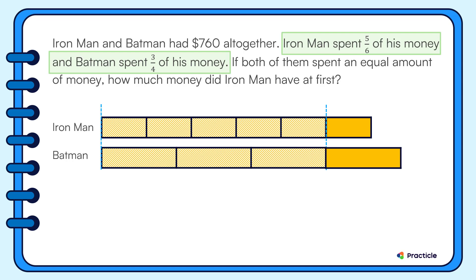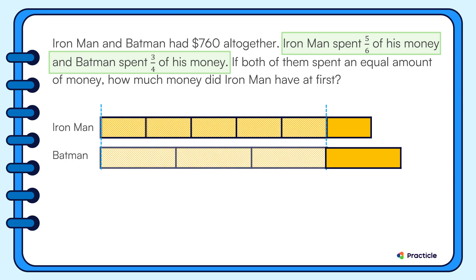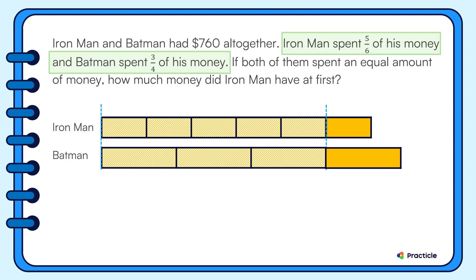You'll love the next part. Now that five of Iron Man's units is the same as three of Batman's units, how can we make it easier for us to compare the amount of money between these two people? Did you think of making the size of the units the same? If you did, great thinking!